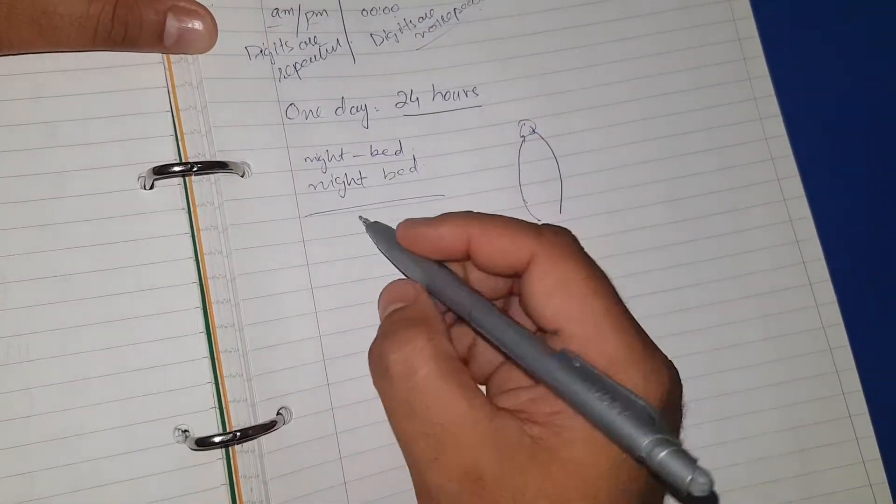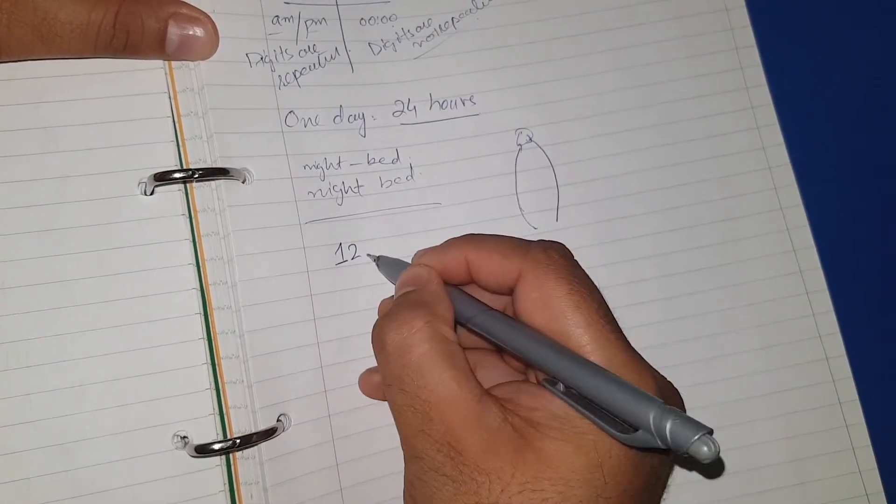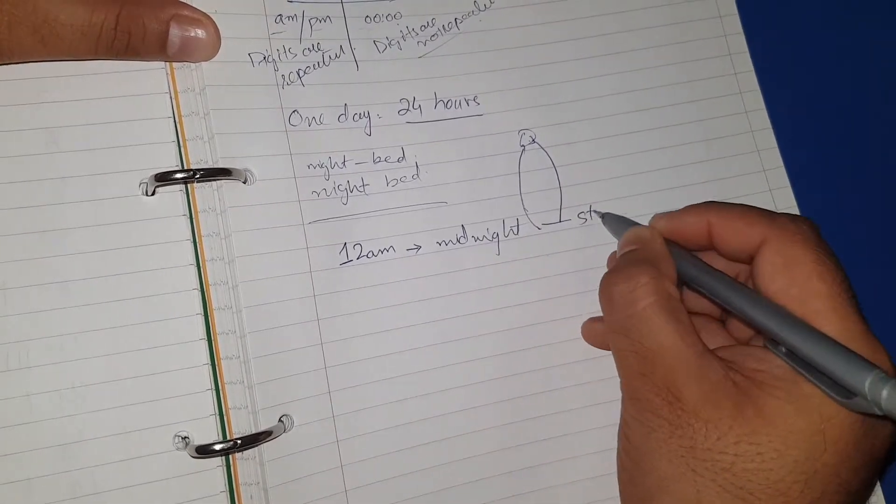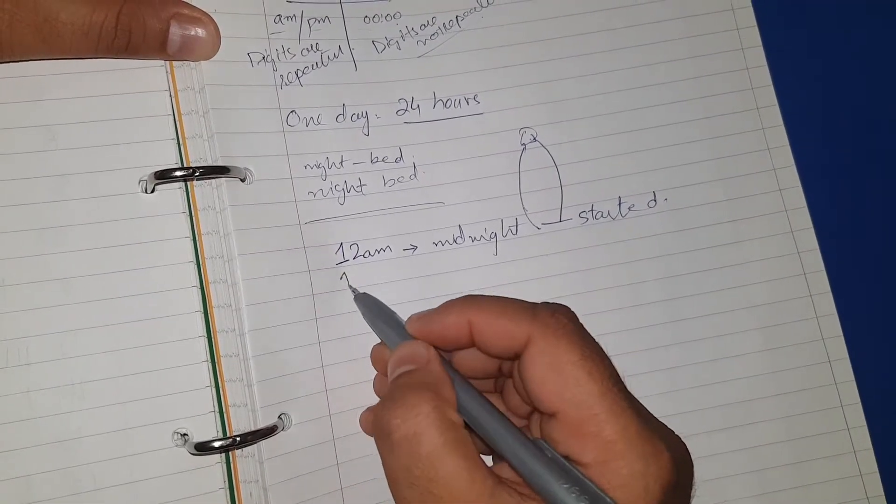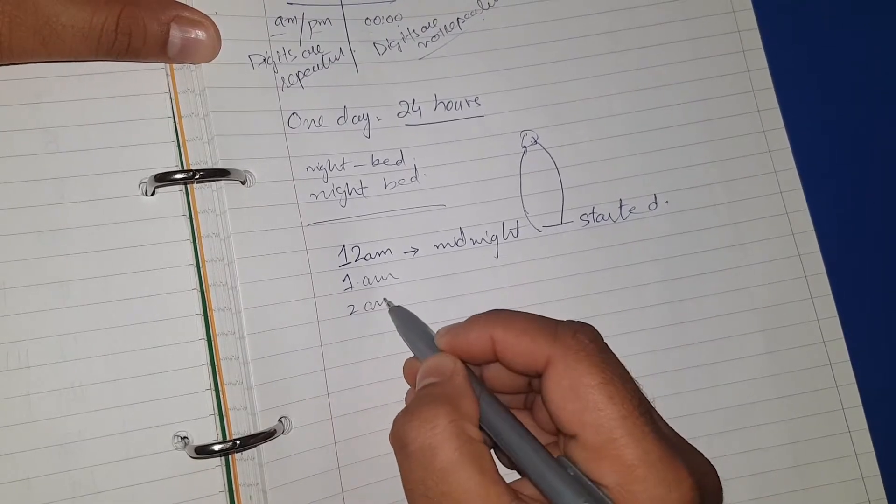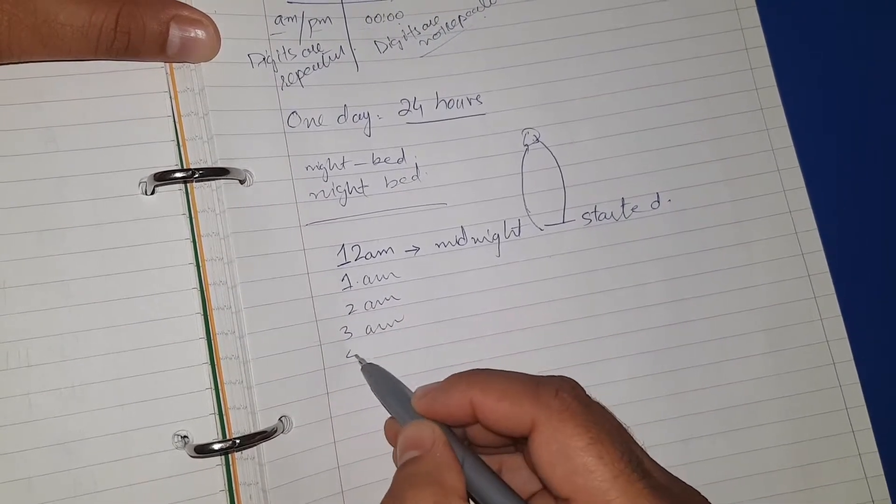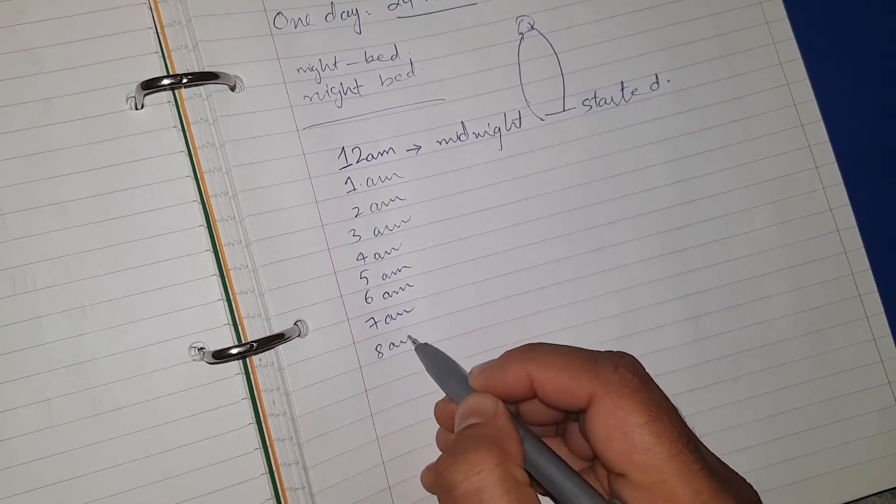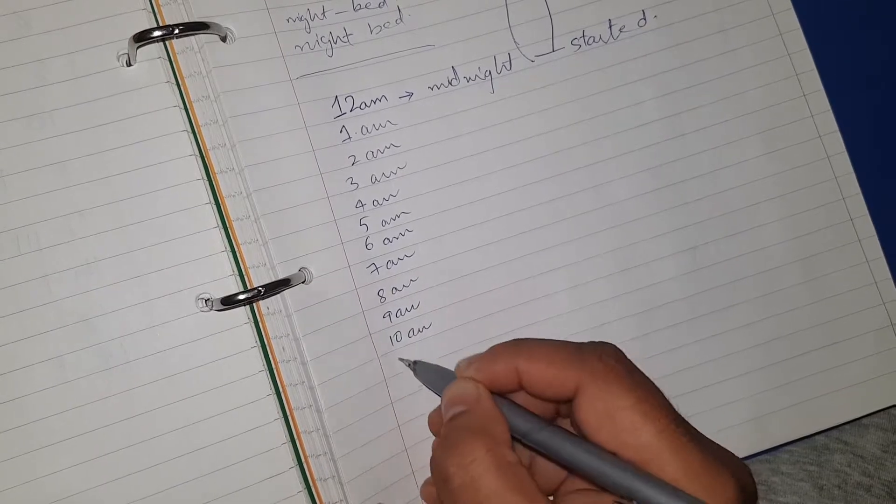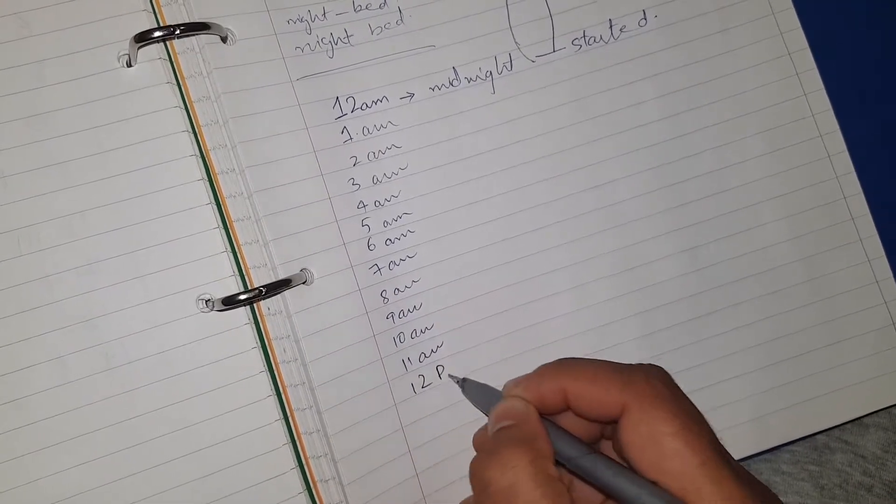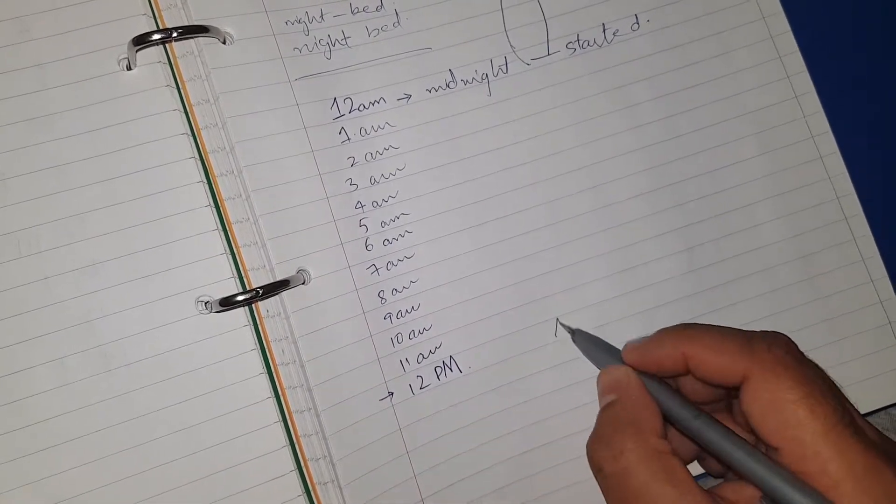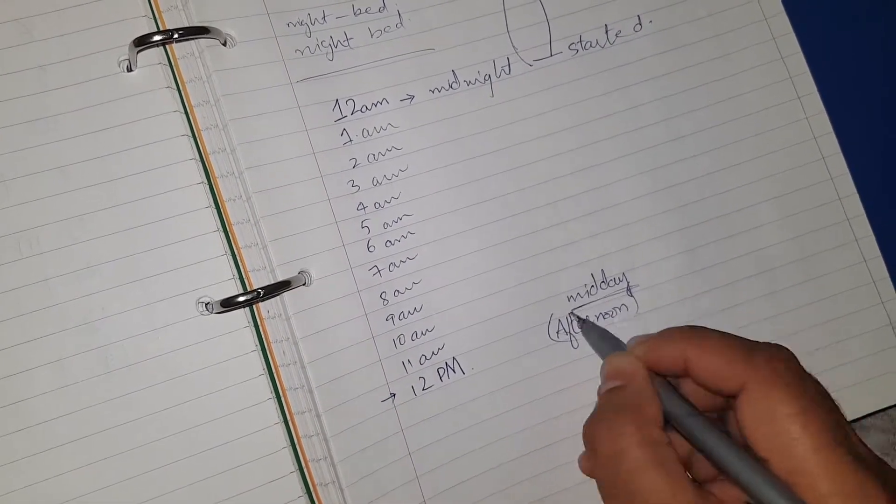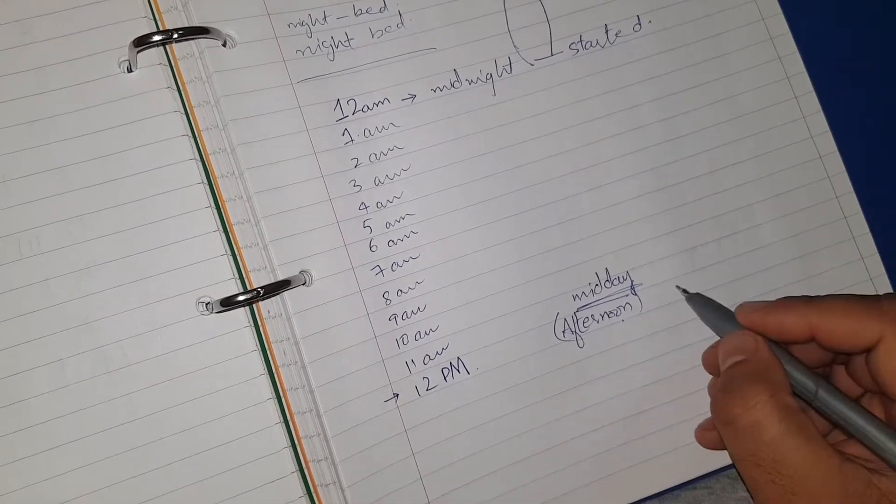Now this is the 12 hour and 24 hour story. Here I will mention how to convert 12 hour to 24 hour. First of all, if I have 12 AM, this means midnight and this also means the day is started. So 12 AM, then 1 AM, 2 AM, 3 AM, 4 AM, 5 AM, 6 AM, 7 AM, 8 AM, 9 AM, 10 AM, 11 AM, 12 PM. PM means afternoon or midday.